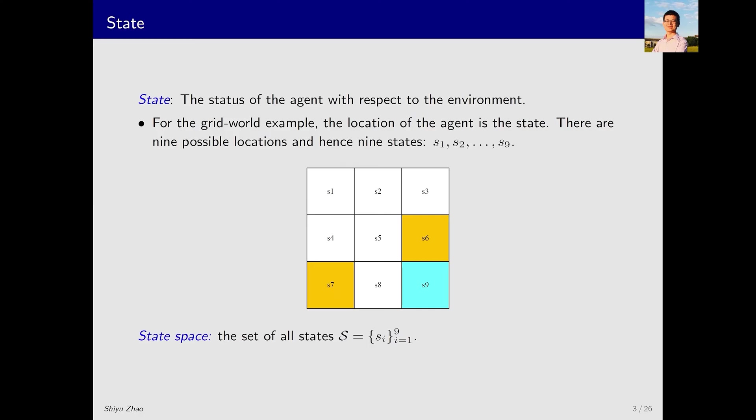Using this example, we will introduce the first concept in our course: State. State describes the agent's status with respect to the environment. In the grid world example, state refers to the location, with locations labeled as S1, S2, S3 up to S9.